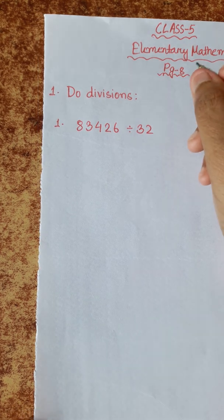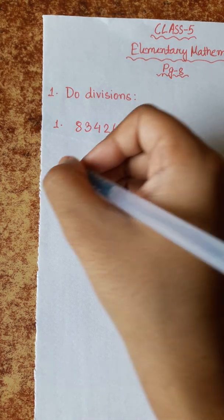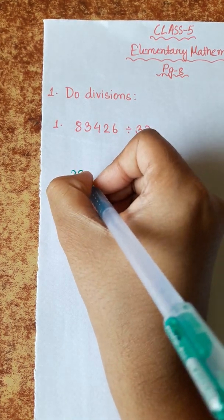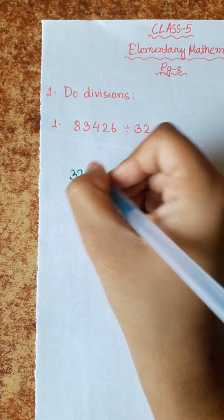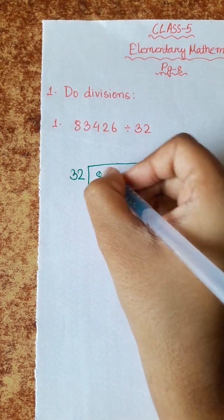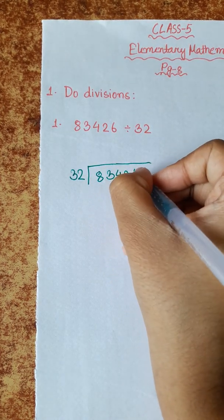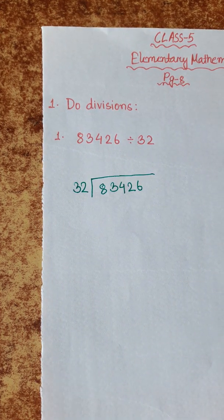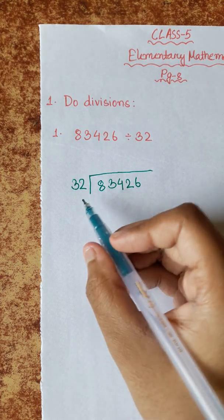This is time-consuming math. So we need to follow the rules. 32 is our divisor.